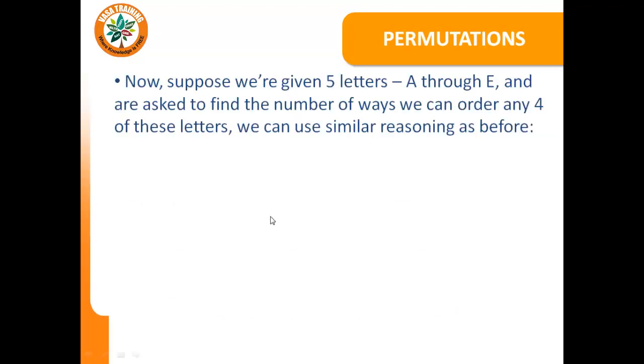Okay, so now we're ready to tackle permutations. Now suppose we're given 5 letters A through E and are asked to find the number of ways we can order any 4 of these letters. We can use a similar reasoning as before. And that is by saying that there are 4 blanks. And so there are 5 options for the first blank, 4 options for the second blank, 3 options for the third blank, and 2 options for the fourth blank. And we multiply these out and we get 5 times 4 are 20, 20 times 3 are 60, and 60 times 2 are 120. So we get 120.